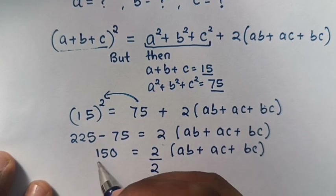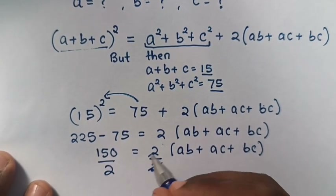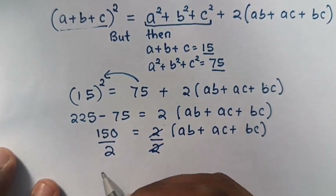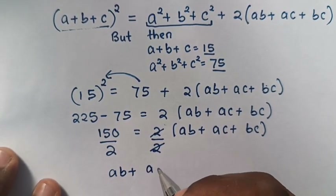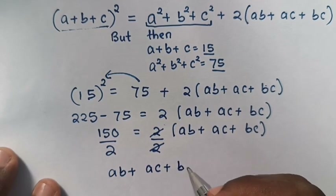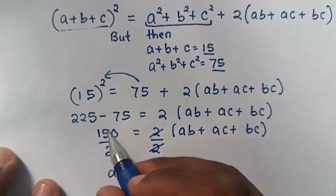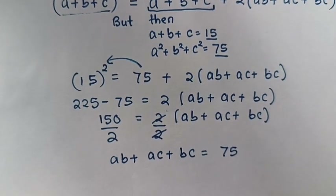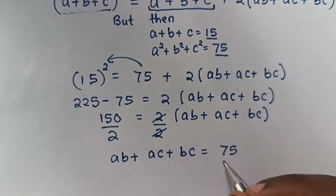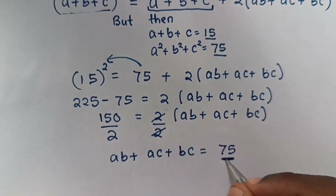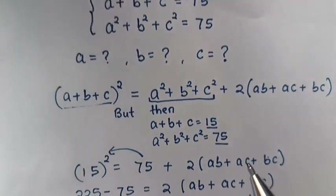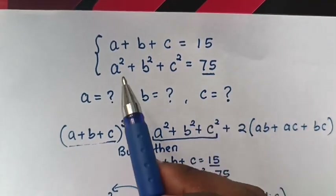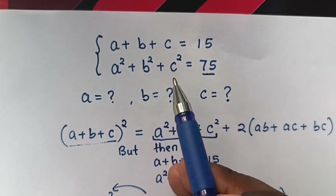We divide by two on both sides, so ab plus ac plus bc is equals to 75. Now we can see this value is equal to 75, and referring back to our equation, a squared plus b squared plus c squared is also equal to 75. Therefore it means a squared plus b squared plus c squared equals ab plus ac plus bc.